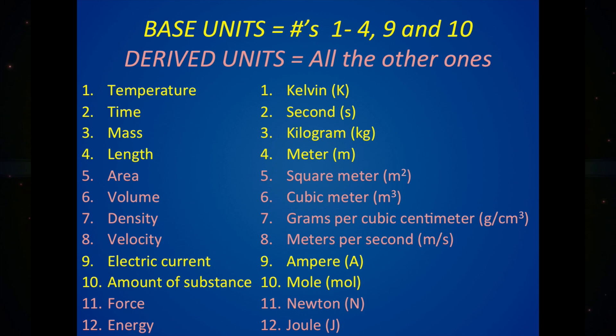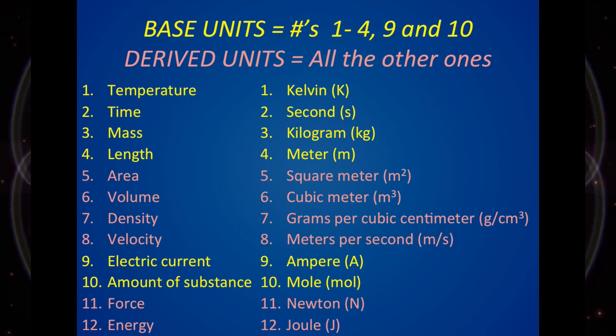If you're wondering which one of these are base units and which one of these are derived units, numbers one through four are base units and nine and ten are also base units. And then your derived are there in pink. I mixed it up a little bit just to mess with you, just to see if you could hang out with your base and derived units.